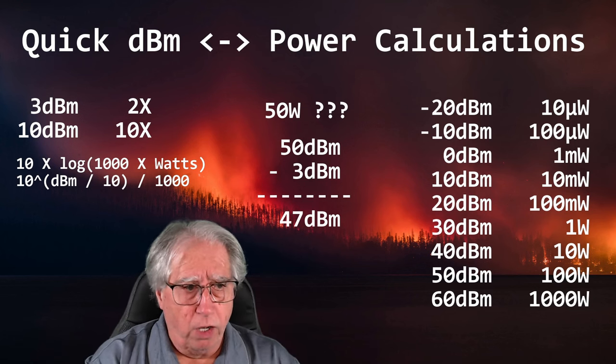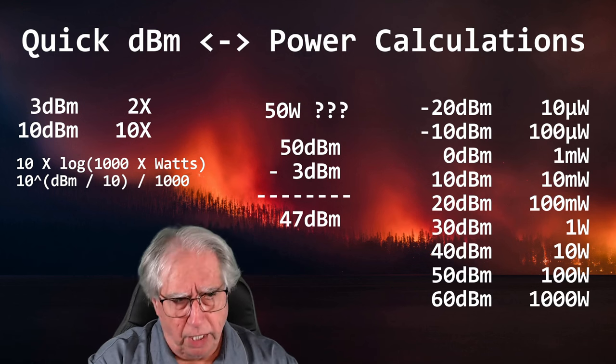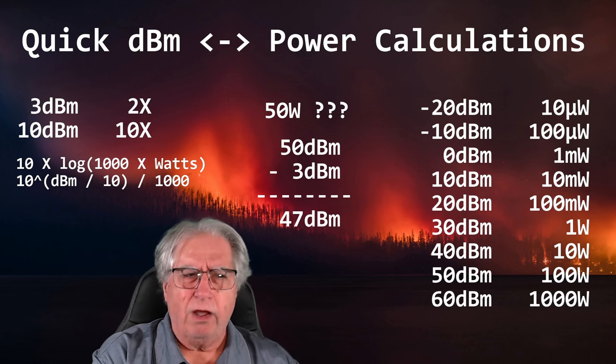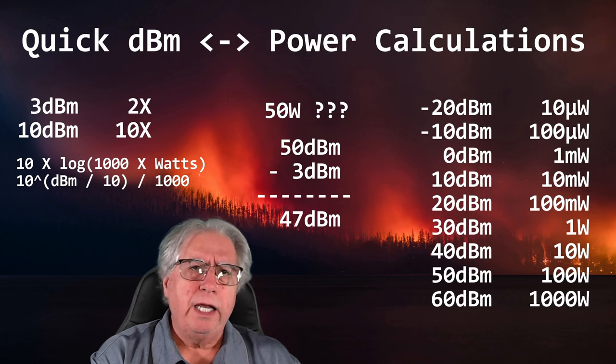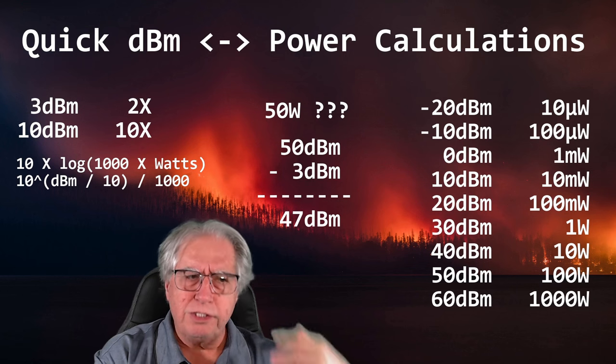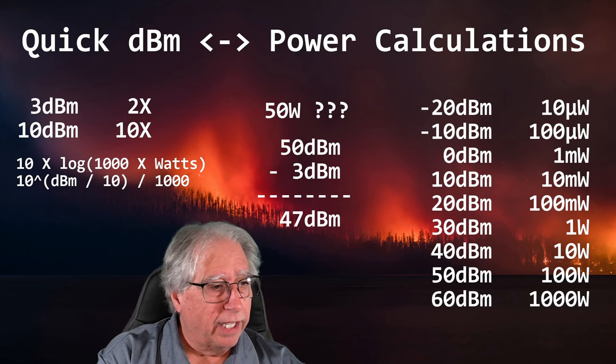Is it exactly right? Not 100% of the time, but pretty close. The jumps of 10 are always right; the 3 is slightly off but not much. It's all math — you're just doing a shortcut in your head. Thanks for watching. This is Stu, AG6AG — 73 and hope to hear you on the air.